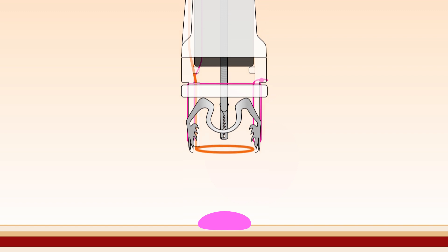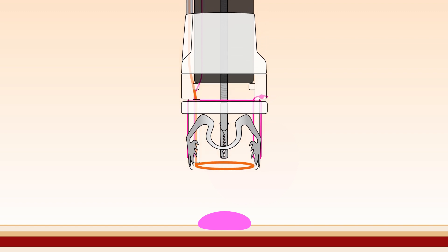The endoscope with the FTRD system is then approached towards the respective site. The affected tissue is grasped with a special grasping forceps which is inserted through the endoscope.